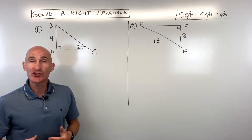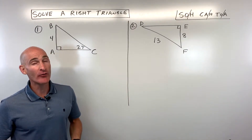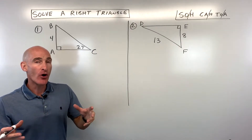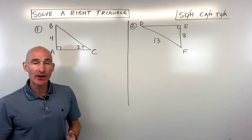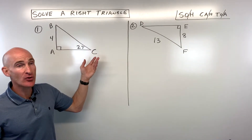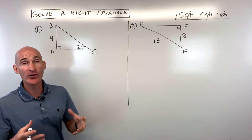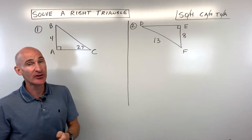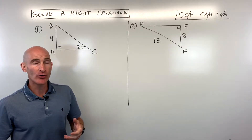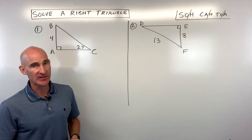In this video you're going to learn how to solve a right triangle. What does that mean? It basically means you're going to solve for all the missing angles and all the missing sides — pretty much everything in the triangle. With three angles and three sides, you'll find all six pieces. You'll be given a couple of items, whether it's an angle or a side, and you have to find the missing pieces.